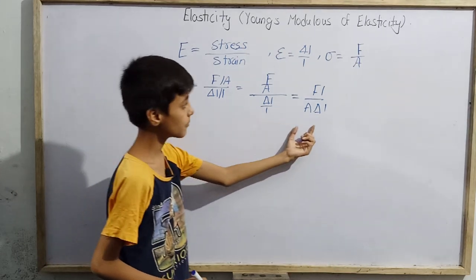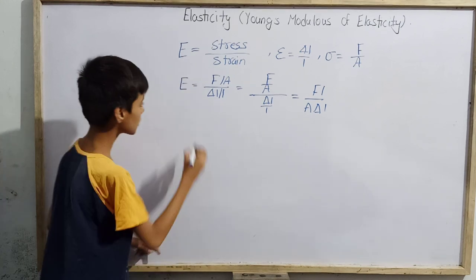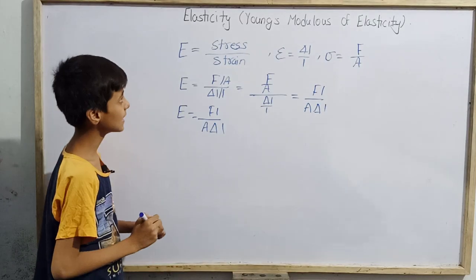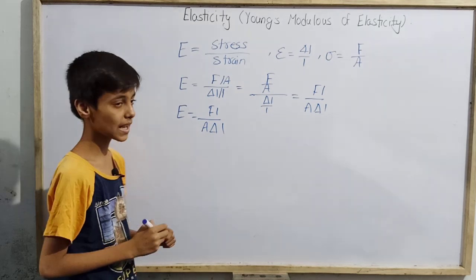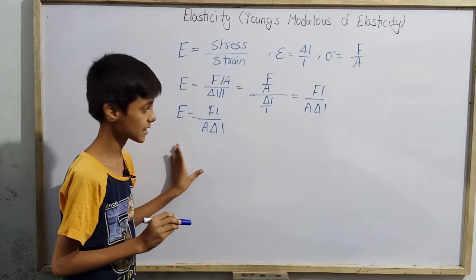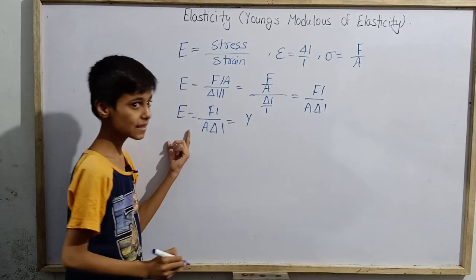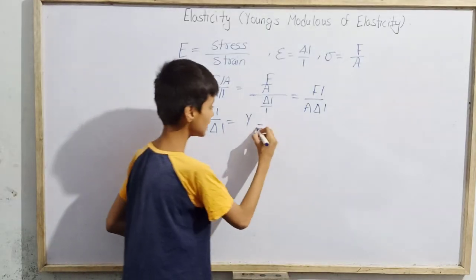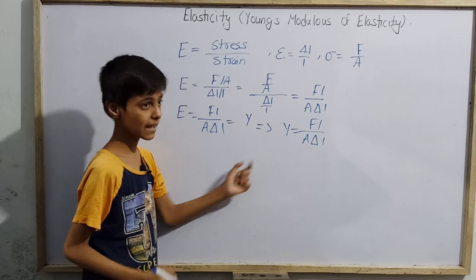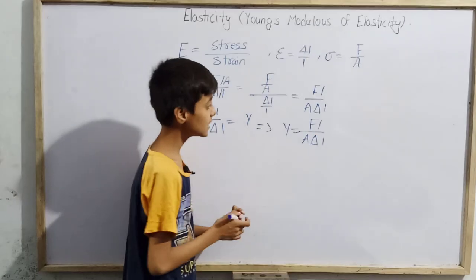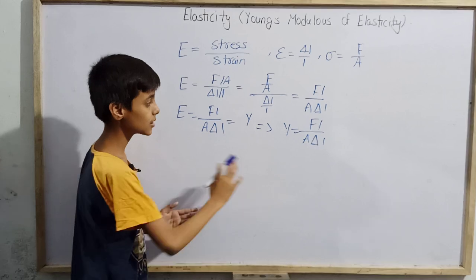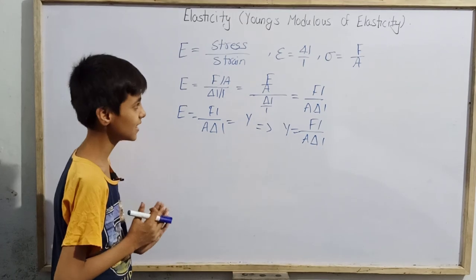So we get that E = FL / (A·ΔL). A modulus of elasticity of this magnitude — FL divided by A·ΔL — is called Young's Modulus of Elasticity, represented by Y. So finally, Y equals FL divided by A·ΔL. This quantity FL/(A·ΔL) is defined as Young's Modulus of Elasticity.